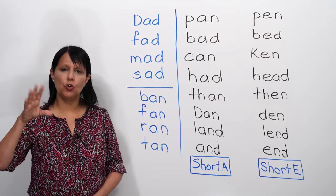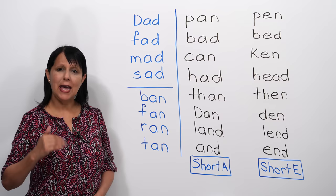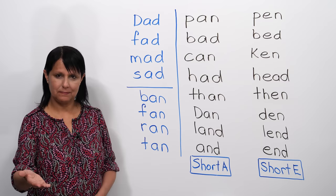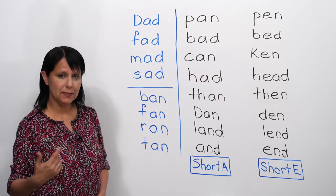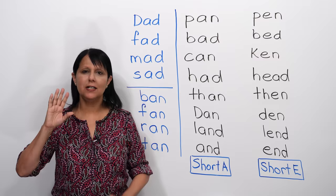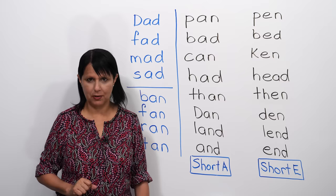Let's do another set. Ready? Ban. Fan. Ran. Tan. Okay? Again, we have that rhyming sound. Ban, fan, ran, tan. And each time, you need to be opening your mouth. So make sure that you are.